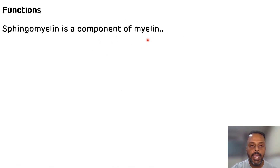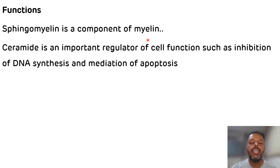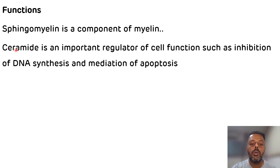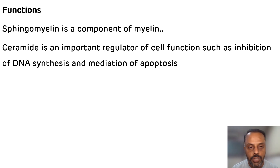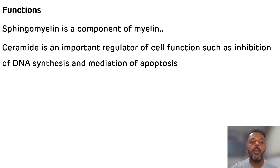Sphingomyelin is present in the myelin sheath and is a component of myelin. Ceramide is an important regulator of cell functions such as inhibition of DNA replication and plays an important role in mediating apoptosis, which is programmed cell death. In various cells, ceramide is released from sphingomyelin by the action of sphingomyelinase. Deficiency of sphingomyelinase leads to Niemann-Pick disease, which is an inborn error of sphingomyelin metabolism.